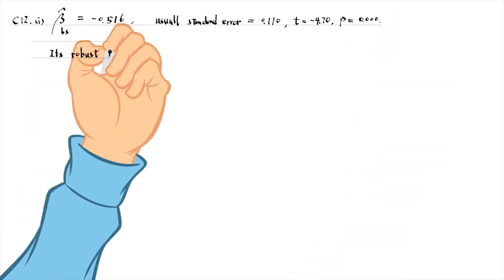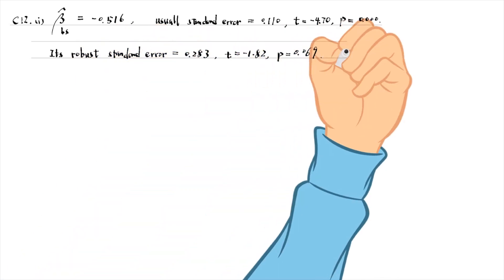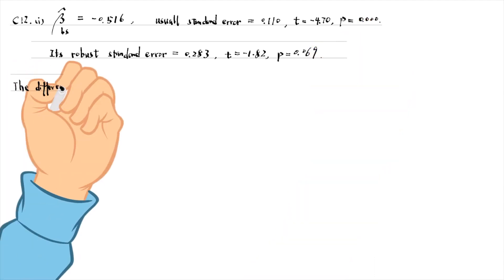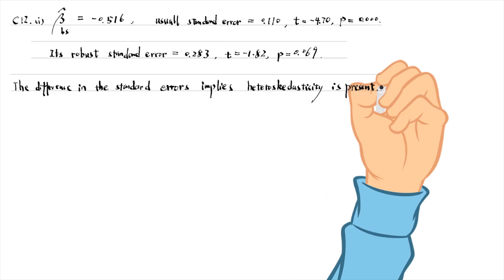The robust standard error is larger than the usual standard error, 0.283. The t-statistic is minus 1.82, and its p-value is 0.069. The variable is less significant, but is still statistically different from 0 at the 10% level. The difference in the standard errors implies heteroskedasticity is present.